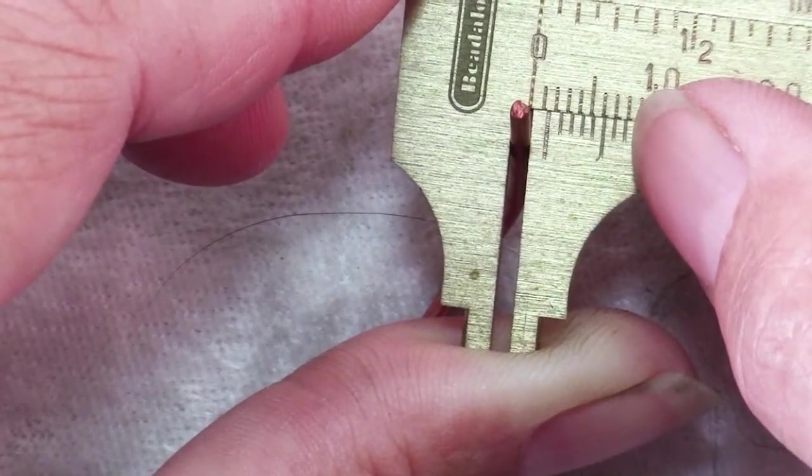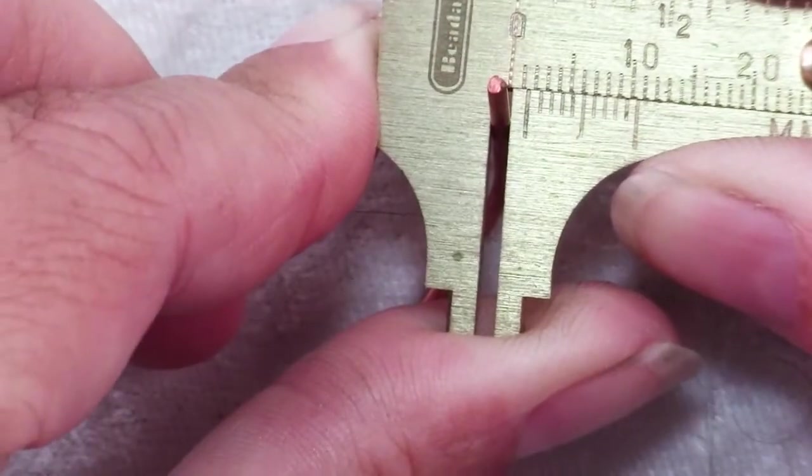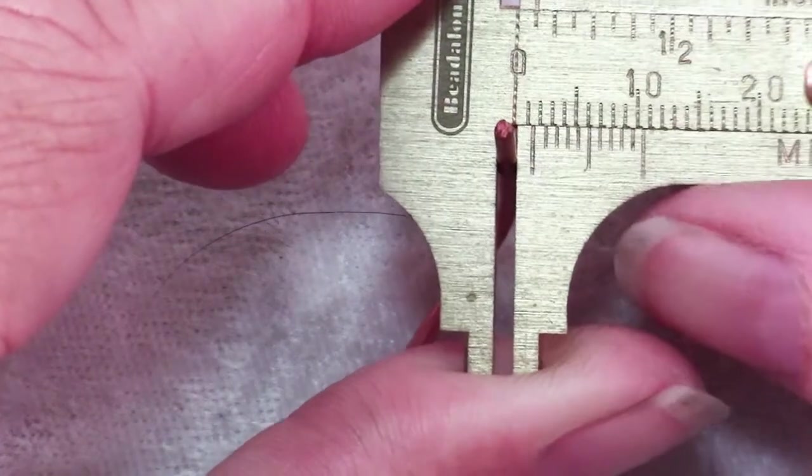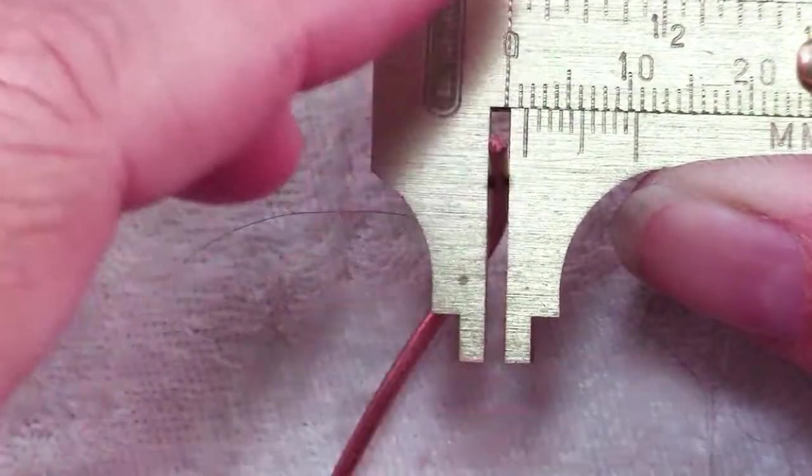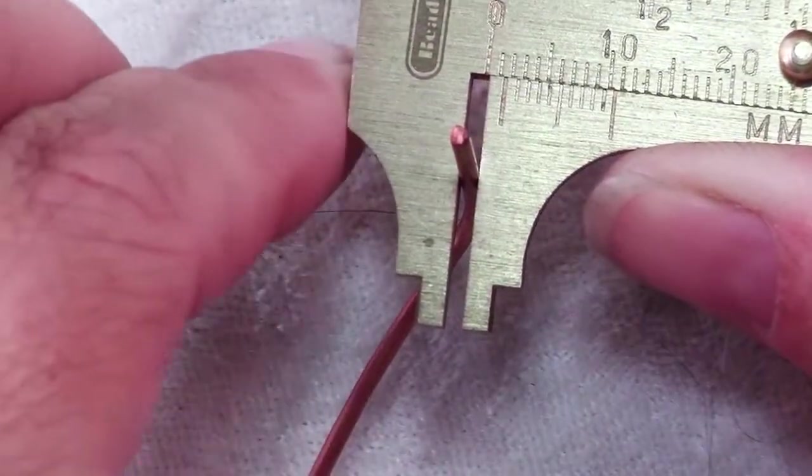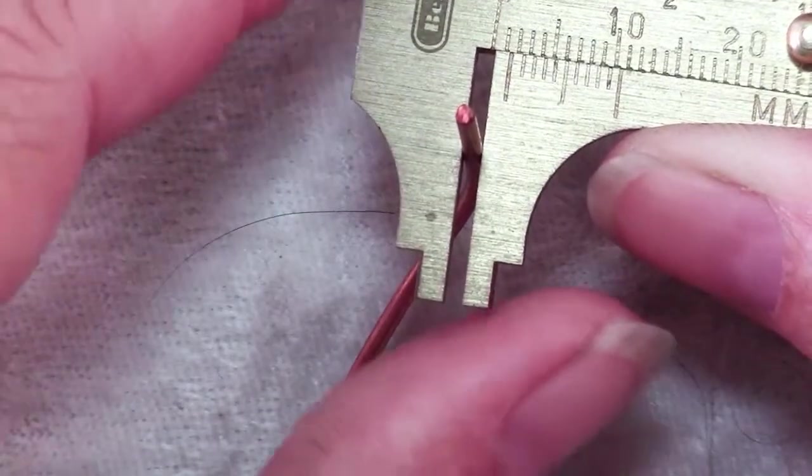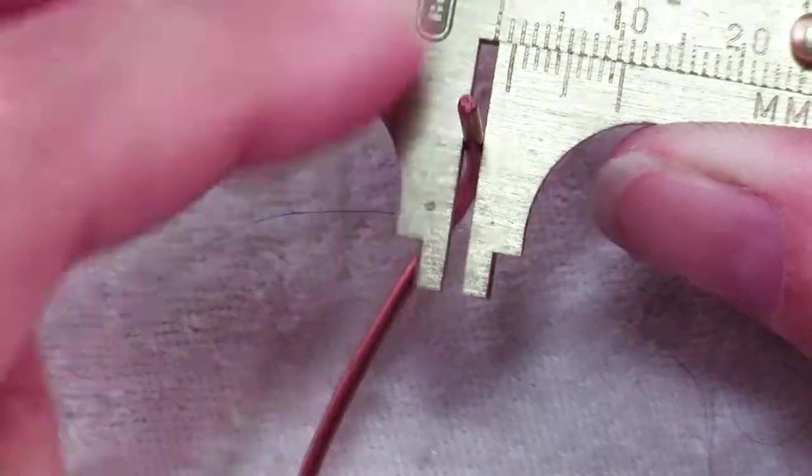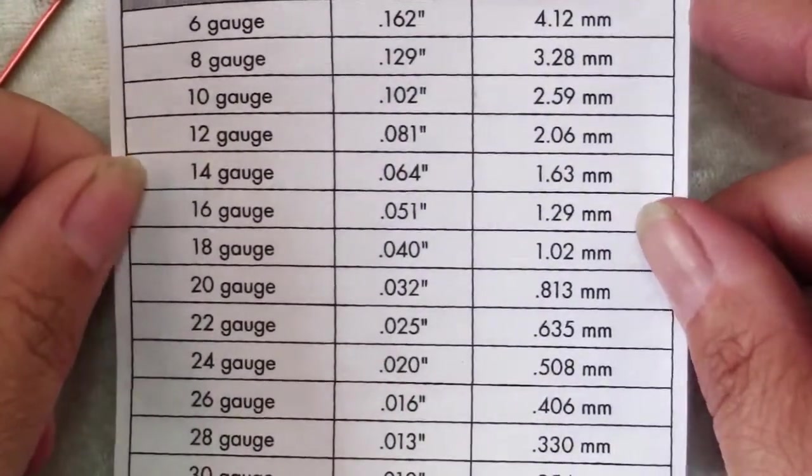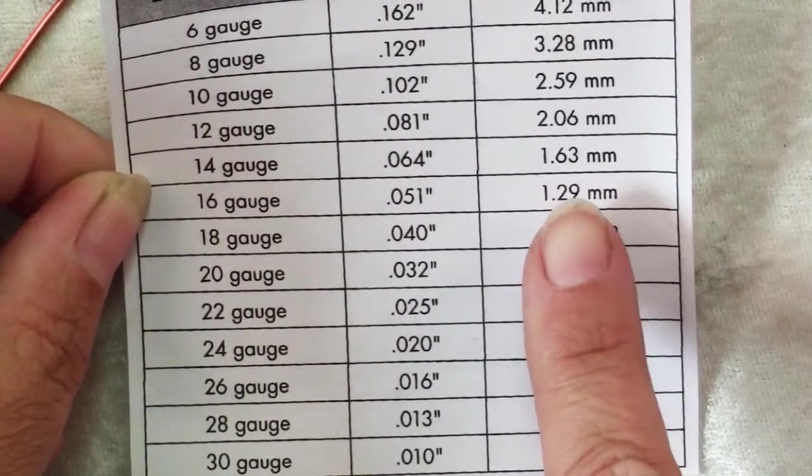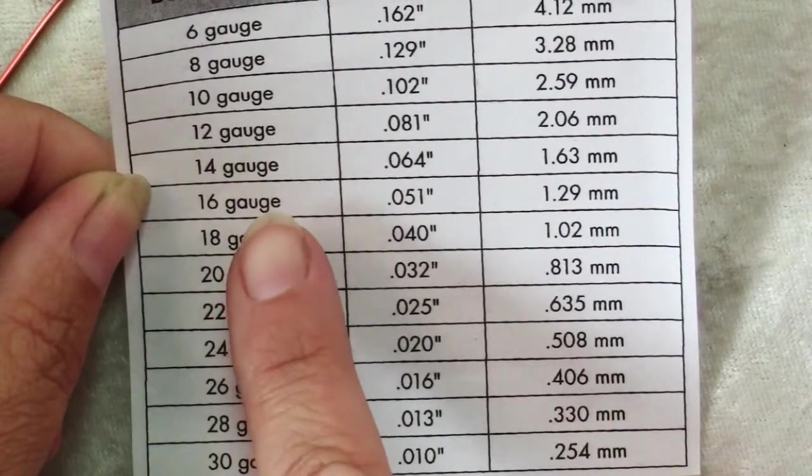In this case it's the 6, so this is 1.6 millimeters. When measuring, especially for fine measurements, leave the item between the jaws to get more accurate readings. With a chart like this, I can see that 1.63 millimeters means this wire is 14 gauge.